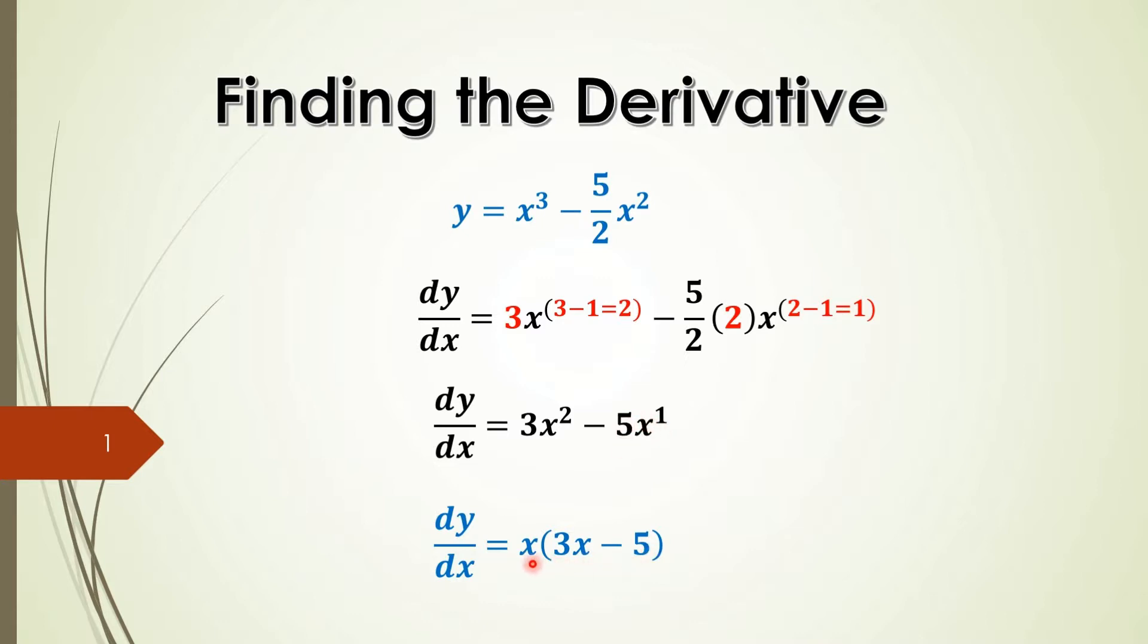If I multiply this back out, x times 3x will give you 3x squared, and x times minus 5 will give you minus 5x. You know that you have the prime form now.